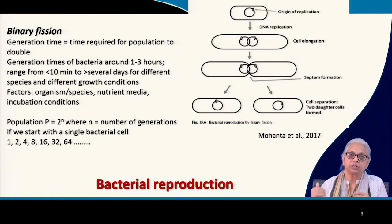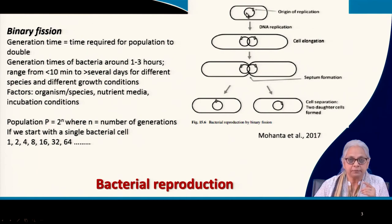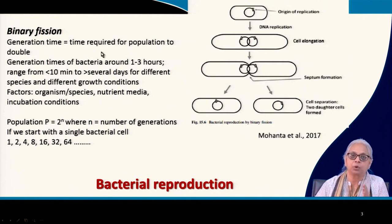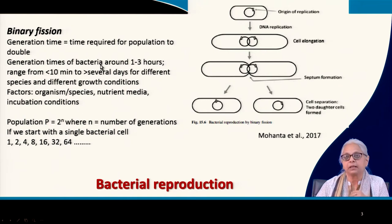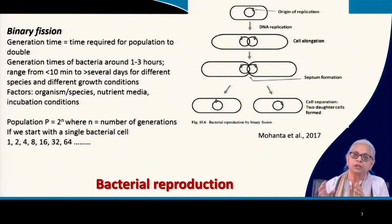So 1 goes to 2, 2 goes to 4, 4 goes to 8, 8 goes to 16, and so on. From the time you have a single cell to the time you have 2 cells is the generation time — the time required for the population to double. Generation times for bacteria are typically around 1 to 3 hours, or in a wider range, from less than 10 minutes to several days, depending on the species and growth conditions.